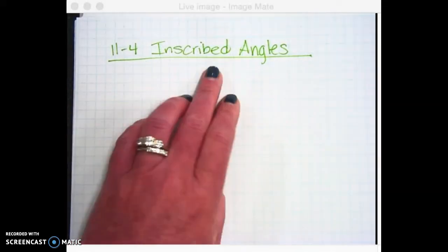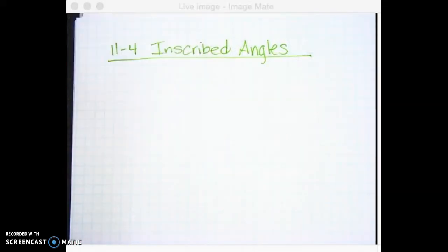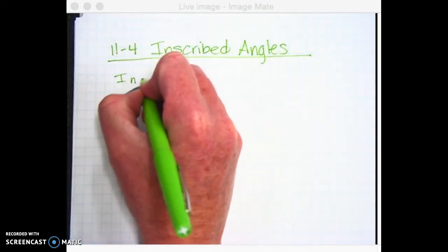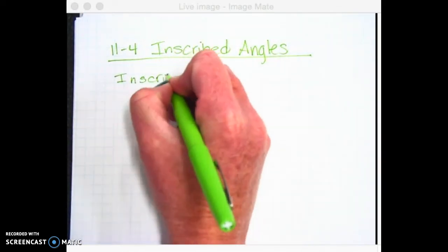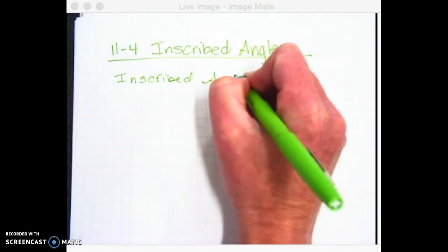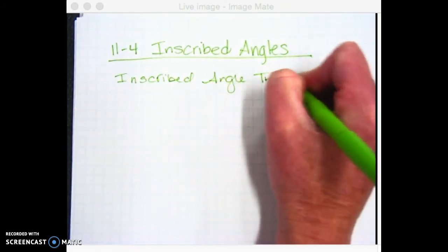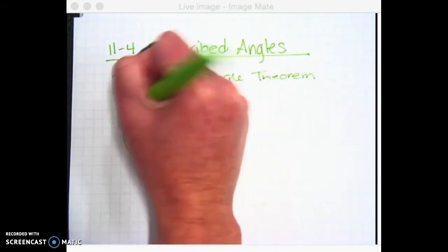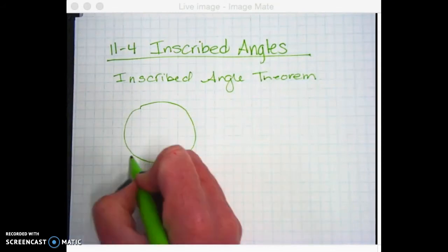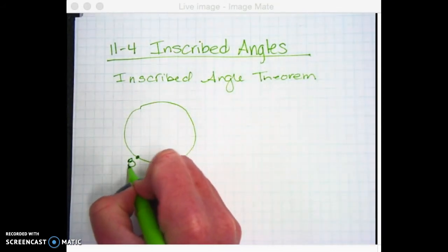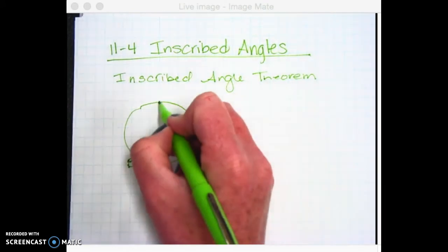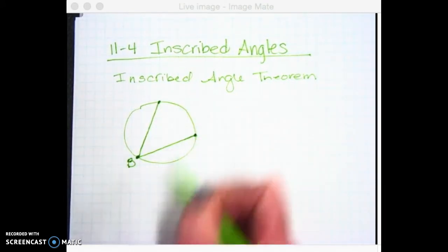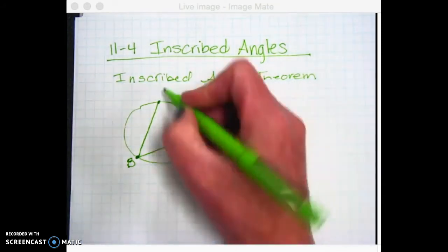Section 11-4 is called inscribed angles. And the first theorem is called the inscribed angle theorem. You're going to start with a drawing of a circle. We're going to put vertex B on the circle instead of at the center and we're going to draw that angle so that it goes to the other side of the circle.